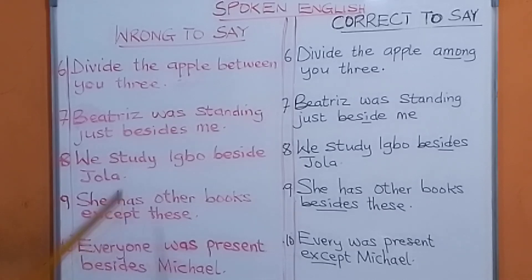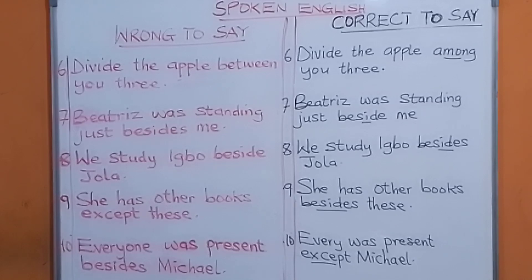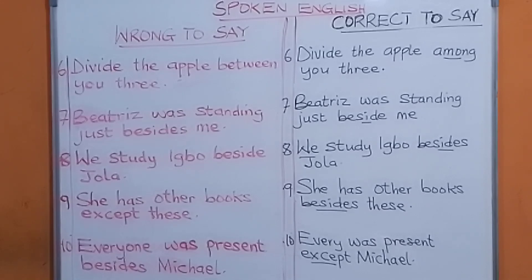Now, we have 'besides' with S and 'beside' without S. In English, 'beside' without S means 'by the side of.' For example, 'you have to stand beside me' means by the side of me. When you say 'besides' with S, it means 'in addition to.'